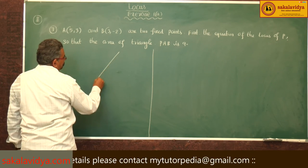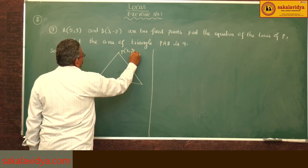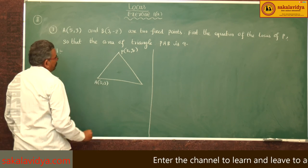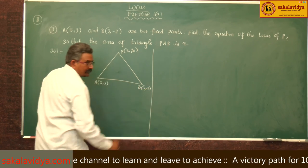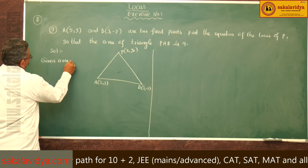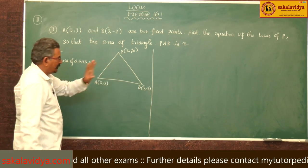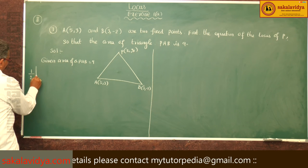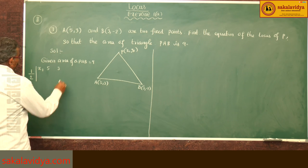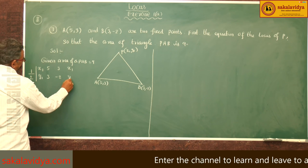Let us draw triangle PAB. This is P(x1, y1), and the two fixed vertices are A(5, 3) and B(3, -2). Given: area of triangle PAB equals 9 square units. This is one-half times the modulus of the determinant formed by the coordinates.